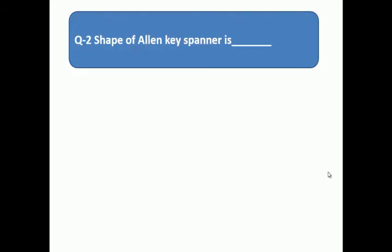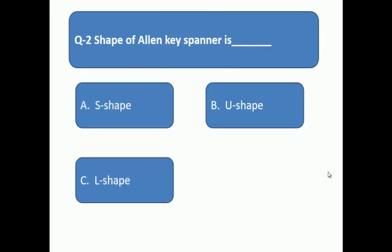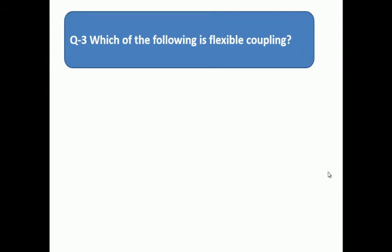Question number 2: Shape of Allen key spanner is - what is the shape of Allen key? A: S shape, B: U shape, C: L shape, D: O shape.